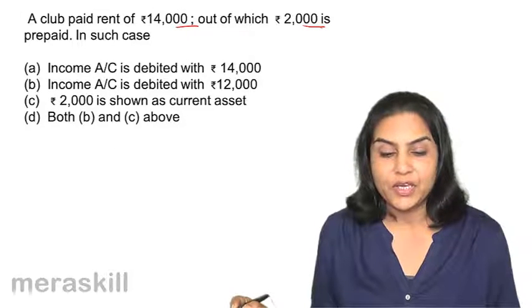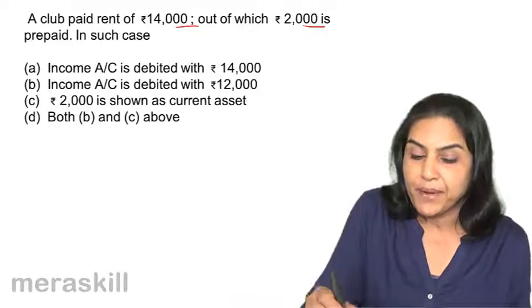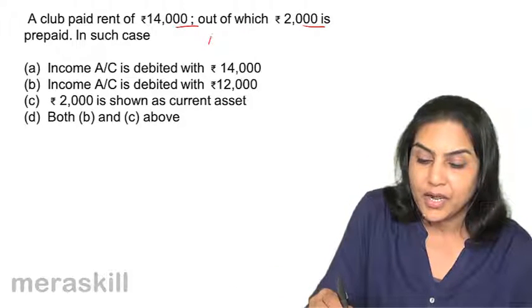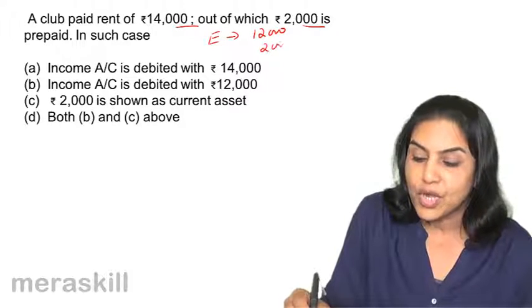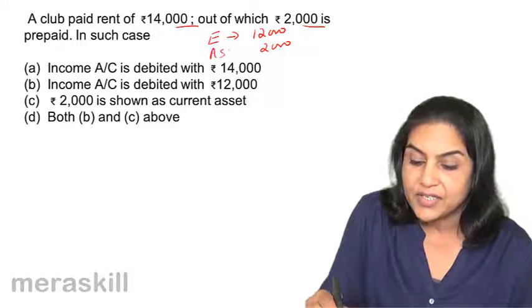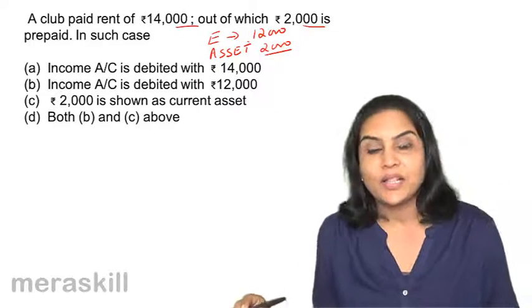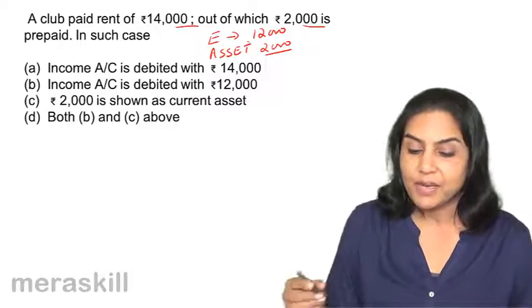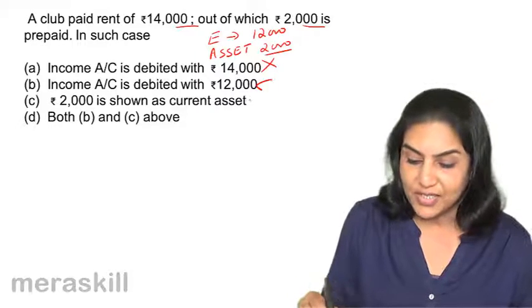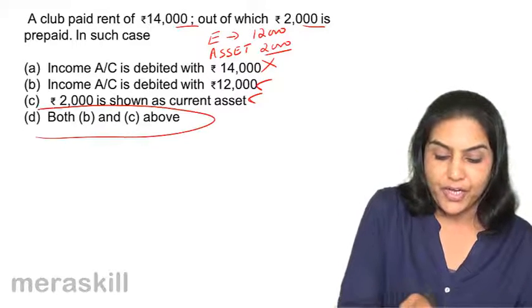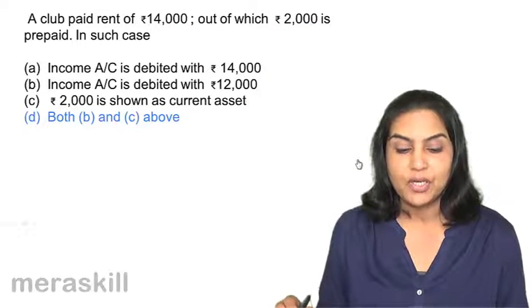Rent paid is $14,000, out of which $2,000 is prepaid. If $2,000 is prepaid, our actual expense is only $12,000. The $2,000 paid in advance is an asset. So $2,000 is an asset and $12,000 is the expense. Income account debited with $14,000 is wrong; debited with $12,000 is correct. $2,000 is an asset — that is also correct. Therefore the correct option is D — both B and C.